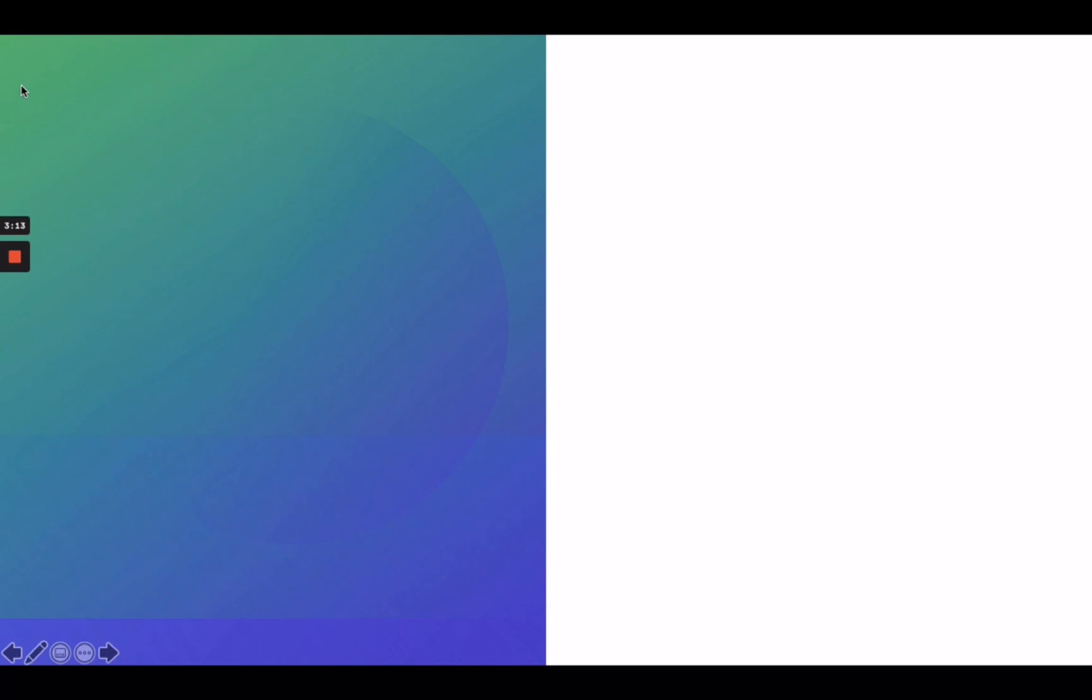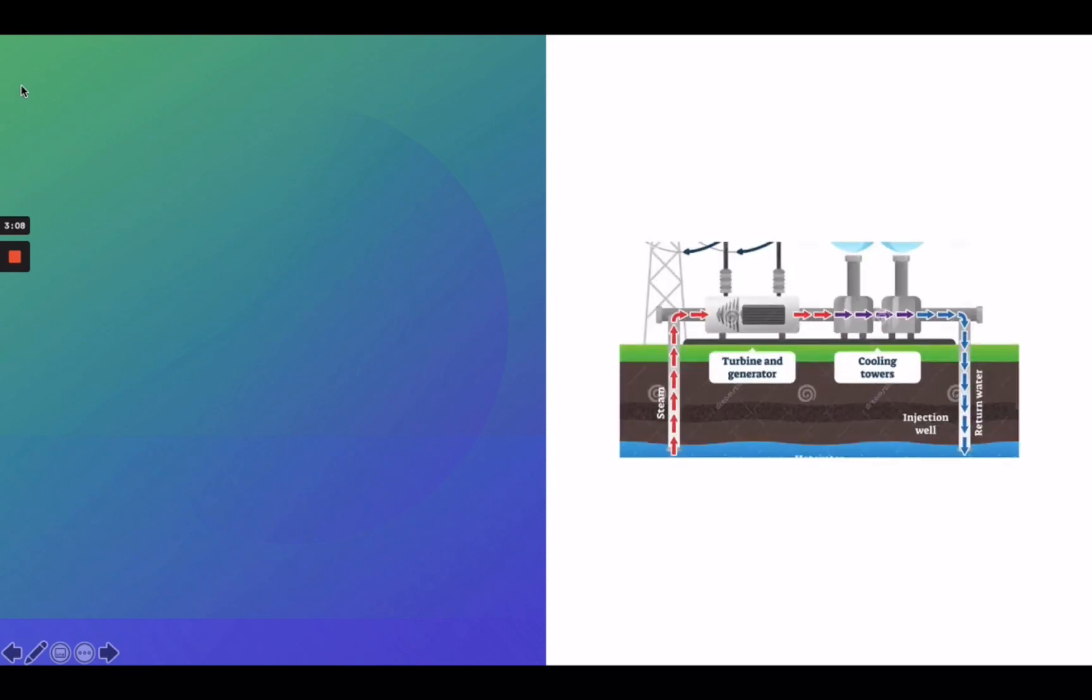You might be wondering how geothermal energy works. Let's take a look at this picture. Geothermal energy simply begins by digging a hole down into the Earth, and as the hole gets deeper, and so its temperature. Because originally, inside of the Earth is full of heat. This heat is called geothermal energy.